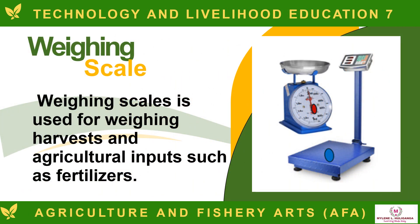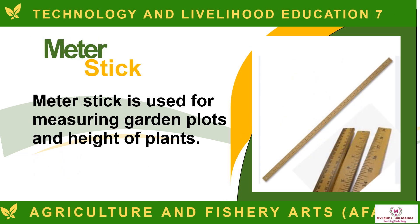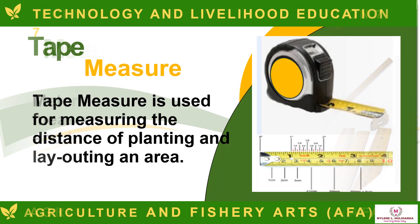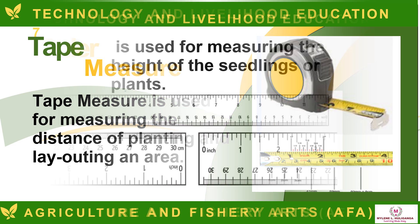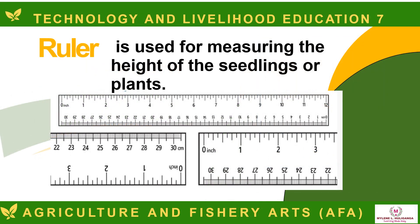The Weighing Scale is used for weighing harvests and agricultural inputs such as fertilizers. The Meter Stick is used for measuring garden plots and height of plants. The Tape Measure or Tape Rule is used for measuring the distance of planting and laying out an area. The Ruler is used for measuring the height of seedlings or plants.